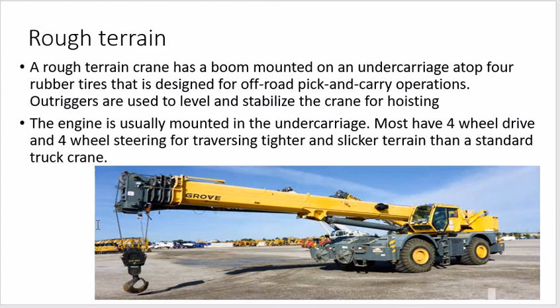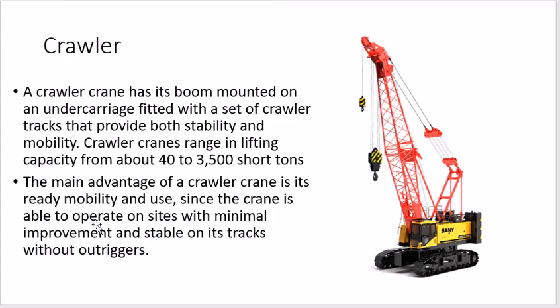The rough terrain crane is more efficient in terms of carrying load — it can take more load compared to the truck mounted crane. It can work on any kind of rough surface like mountains or hilly areas. It is four-wheel drive and four-wheel steering, meaning all four wheels can turn at one time, making it easier to maneuver in small spaces. However, its transportation speed is much less compared to the truck mounted crane.